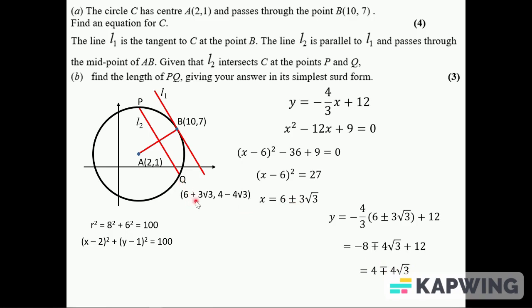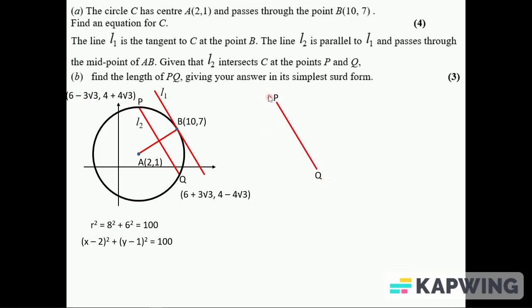And the plus or minus and the minus plus tells you which goes what. So Q, that's not the bigger one, that's where the x value is the bigger x value. So that's x is 6 plus 3√3, with the y value 4 minus 4√3. And the other way around for P.